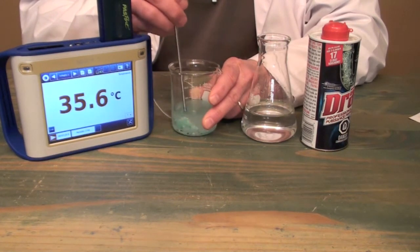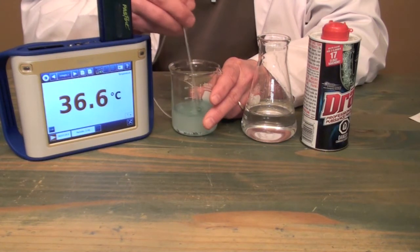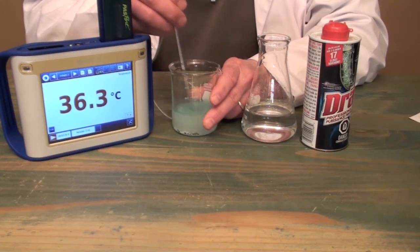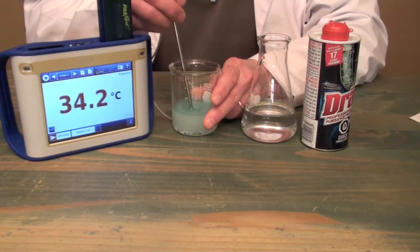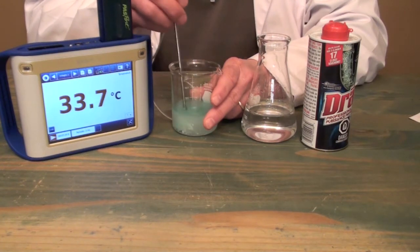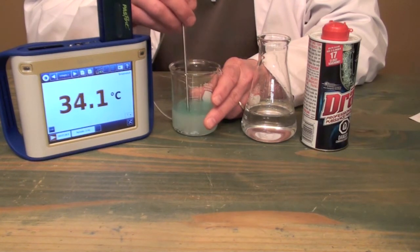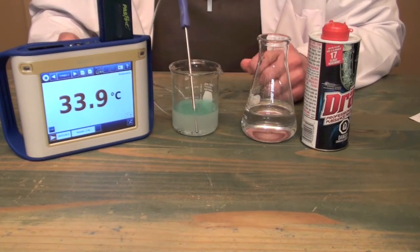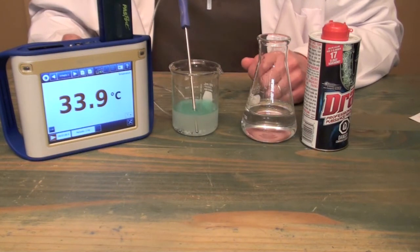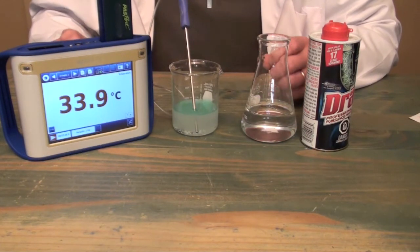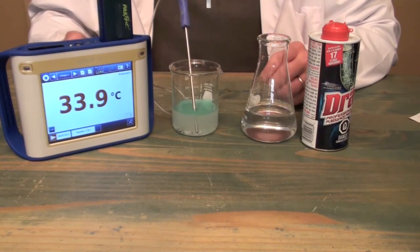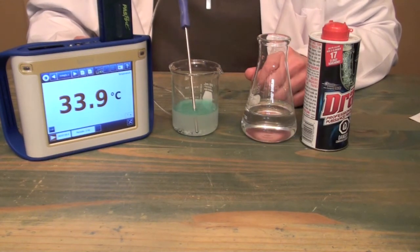Let's stir a little bit and we can see that the temperature continues to rise. We stir a little bit more vigorously to get all of our Drano mixed. So obviously we have a significant temperature rise of about 13 or 14 degrees. So it's very apparent that Drano mixed with water indeed produces an exothermic reaction.